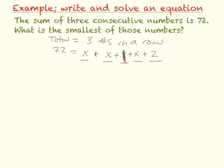So we can simplify seventy-two equals one, two, three X's. So three X plus one plus two is three. So my equation on this one is actually going to be seventy-two equals three X plus three. And that's what I'm going to solve.